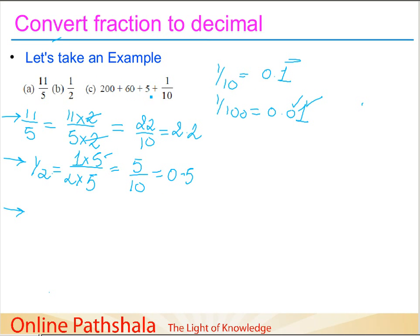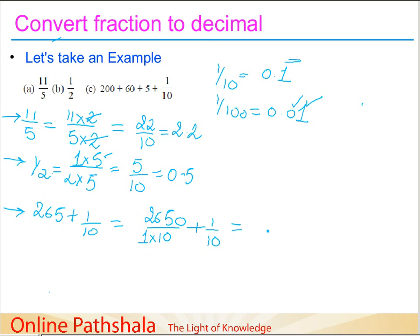Let's consider the third example: 200 + 60 + 5 = 265, and I need to add one-tenth to it. I convert 265 into a fraction with denominator ten — 265 equals 2650 divided by ten — then add one-tenth. This gives me 2651 divided by ten, which I can write as 265.1.